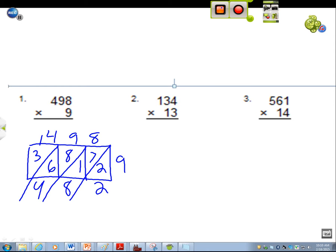14. And then you would do 3 times 1, which would be 4. 3 plus 1. So what's your answer? 4,482.